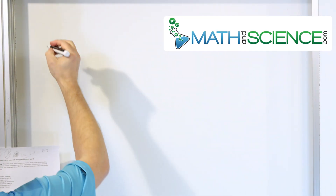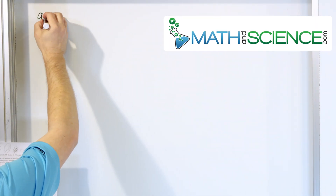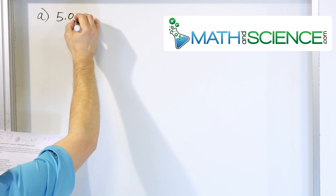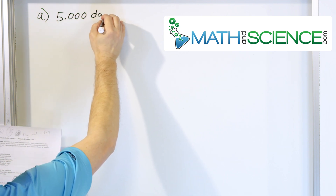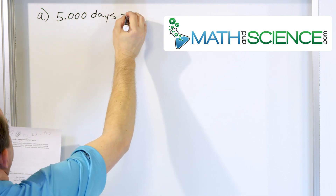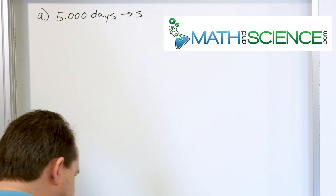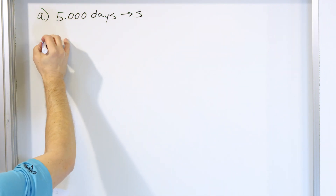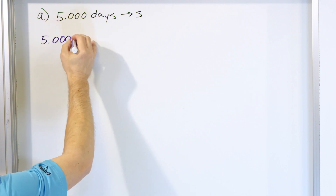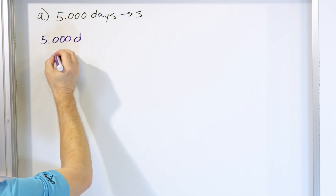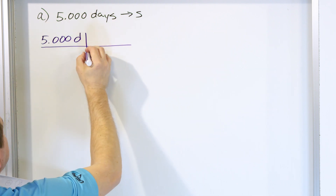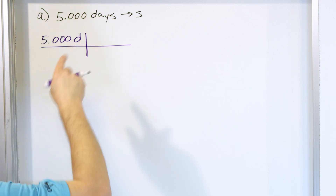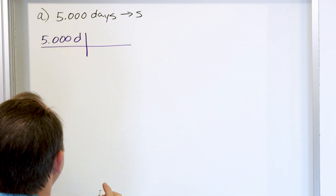Let's talk about problem number one, part A. We want to convert 5.000 days into seconds. So we start with what we know and write down 5.000 days. How do we go into seconds? I don't know how many seconds are in a day, so I can't do it in one step.